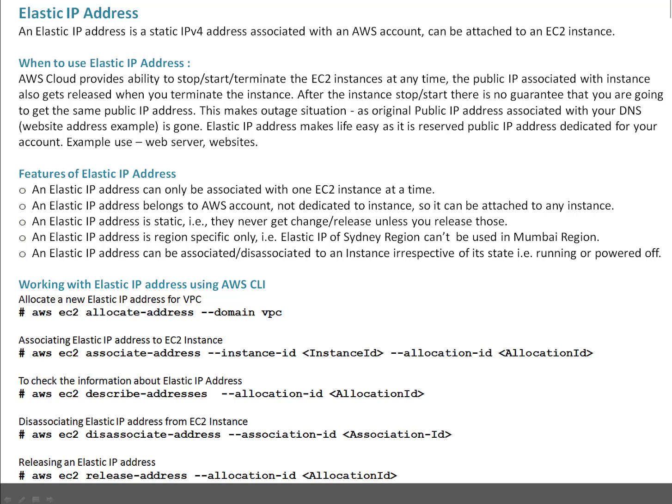An elastic IP address is static. They never get changed and will not automatically get released unless you release it manually. So that's a static IP address which belongs to your Amazon account. The next important thing: an elastic IP address is region-specific.